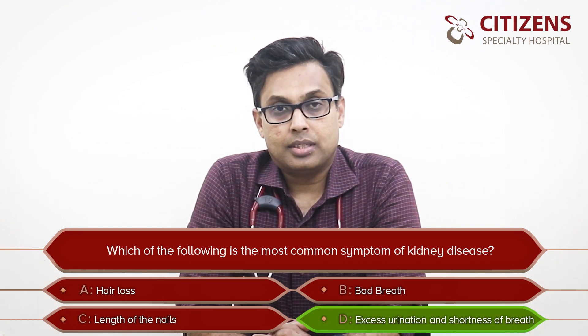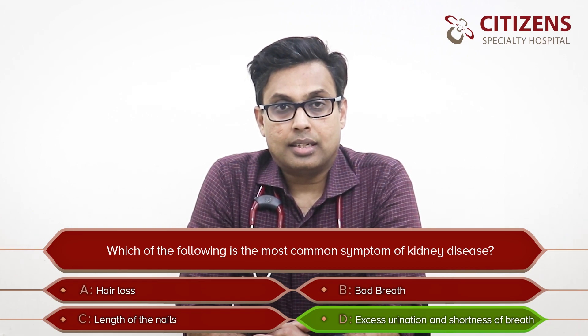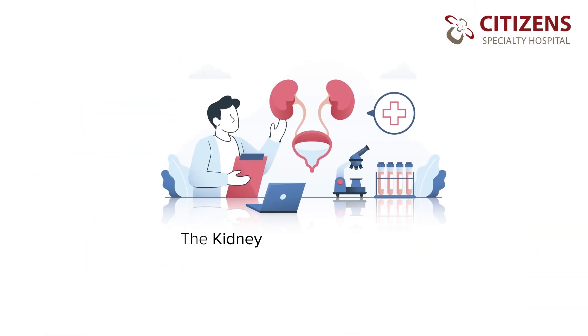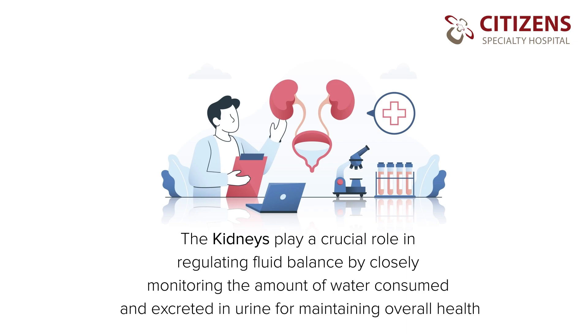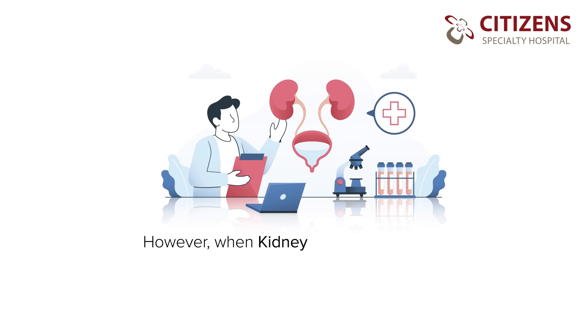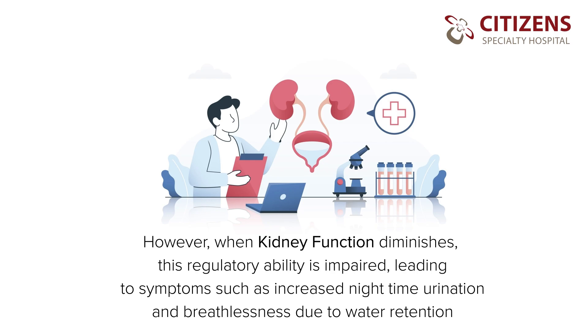And the answer is D, which is excess urination and shortness of breath. Why does this happen in patients with chronic kidney disease? It is because the kidneys help to regulate fluid balance. The amount of water you drink and the amount you pass in urine are closely regulated by the kidneys. When kidney function is reduced, this ability is lost, and patients may find themselves passing more urine at night time. And when water is retained, they become more breathless.